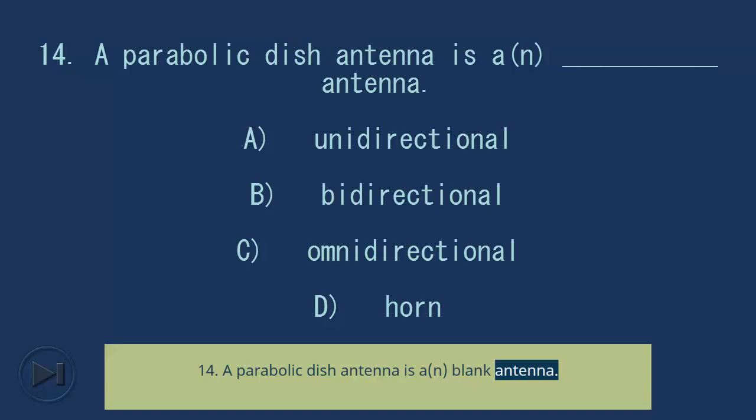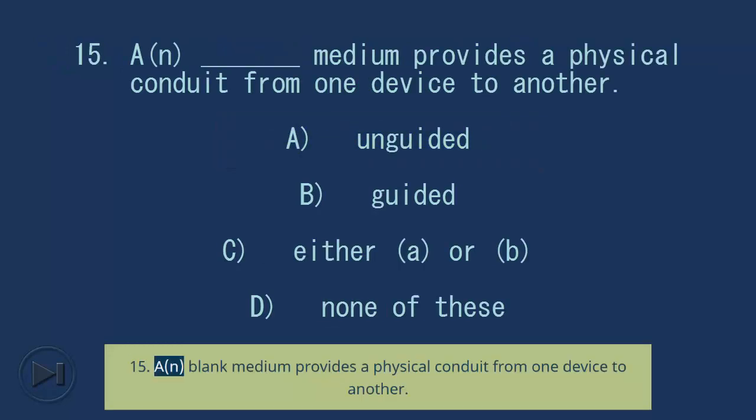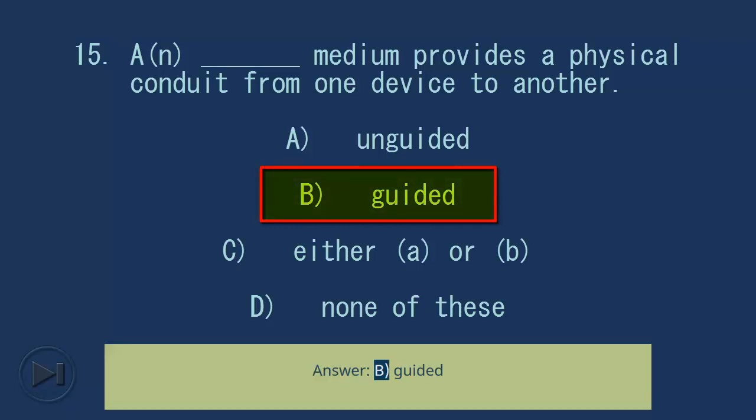Question 14: A parabolic dish antenna is a blank antenna. A) unidirectional, B) bidirectional, C) omnidirectional, D) cone. Answer: A, unidirectional. Question 15: A blank medium provides a physical conduit from one device to another. A) unguided, B) guided, C) either A or B, D) none of these. Answer: B, guided.